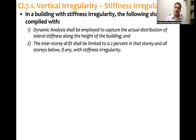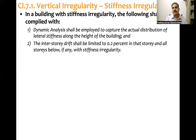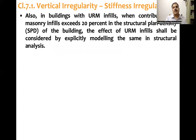Second, interstory drift shall be limited to 0.2 percent in the story with stiffness irregularity and in all the stories below it. For example, if stiffness irregularity is present in the third floor, the interstory drift is limited to 0.2 percent in the third, second, and first stories. For all stories above the irregular story, drift is limited to 0.4 percent. So from the story with irregularity down to the base, the limit is 0.2 percent.